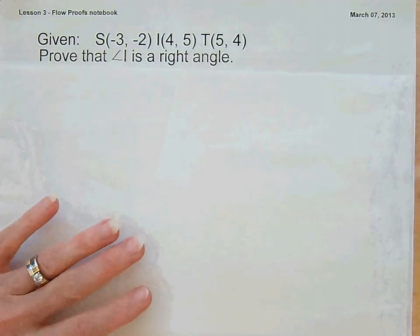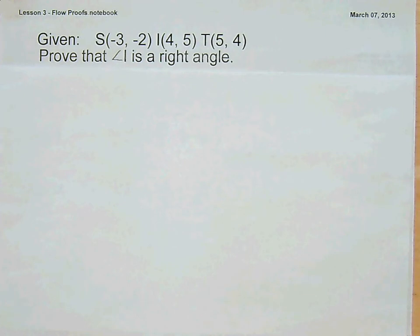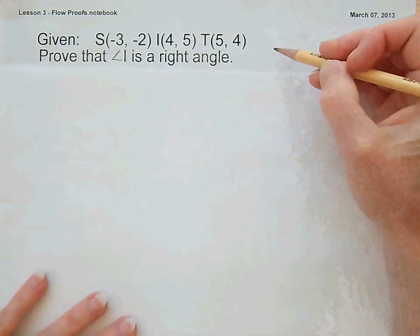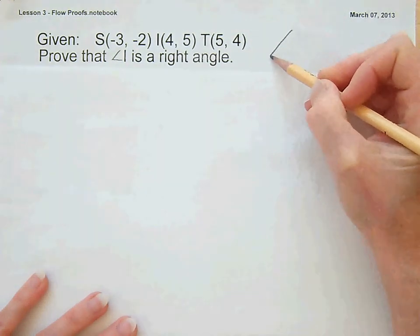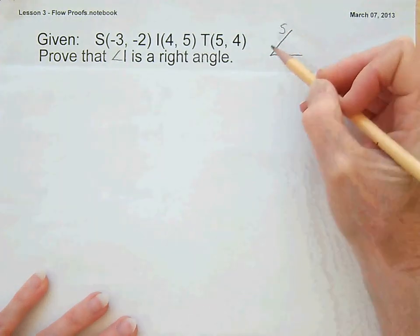What if we wanted to prove that an angle is a right angle? What do we know about right angles that we can figure out using coordinates? Right angles are formed when two lines are perpendicular to each other. If this is triangle SIT and we want to know if angle I is a right angle, then we need to find the slope of SI and the slope of IT.